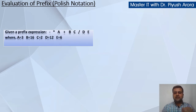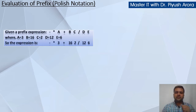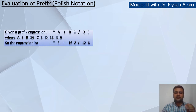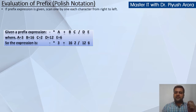Agar in values ko is expression mein substitute kar diya jaye, toh ye expression kuch is tarah se dikhegi: minus multiplication 3 plus 16, 2 divide 12, 6. Ab dekhte hai ki kis tarah se is expression ko hume evaluate karna hoga. If prefix expression is given, scan one by one each character from right to left.